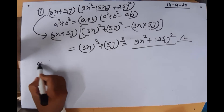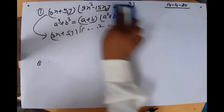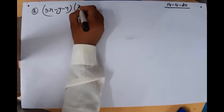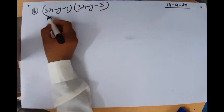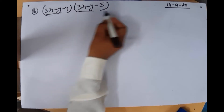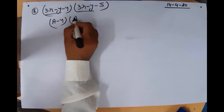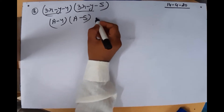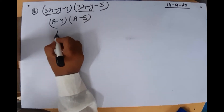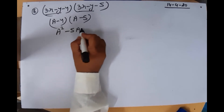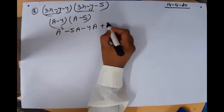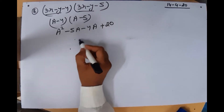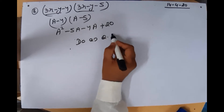Now question number 8: (3x − y − 4)(3x − y − 5). Here 3x − y is the same term in both brackets, so treat it as A. The expression becomes (A − 4)(A − 5) = A² − 5A − 4A + 20 = A² − 9A + 20. Now substitute the value of A and further solve it — do it the same way as question number 6.